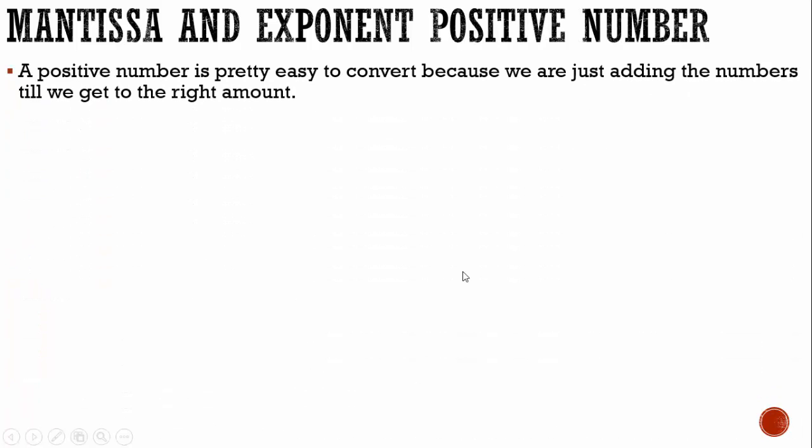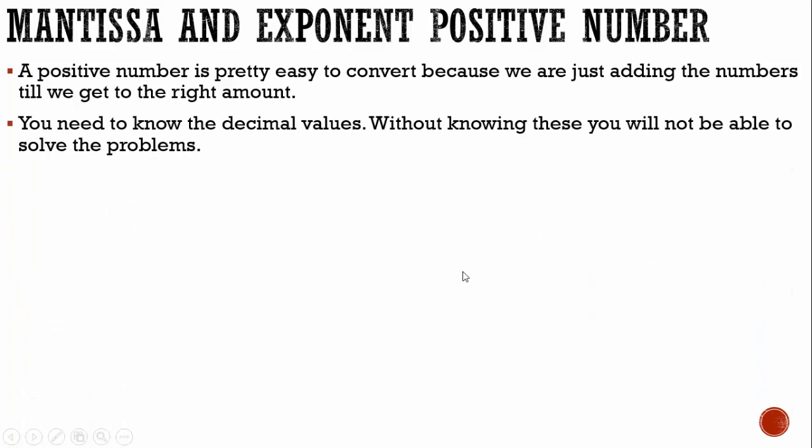So let's go over some tips that may help you. Let's start with positive numbers first. A positive number is pretty easy to convert because we're just adding the numbers till we get to the right amount. Now, you need to know the decimal values. Without knowing these, you're not going to be able to solve the problem.